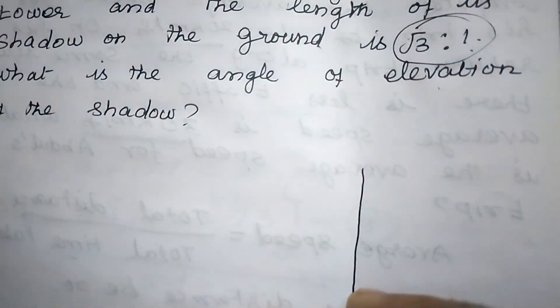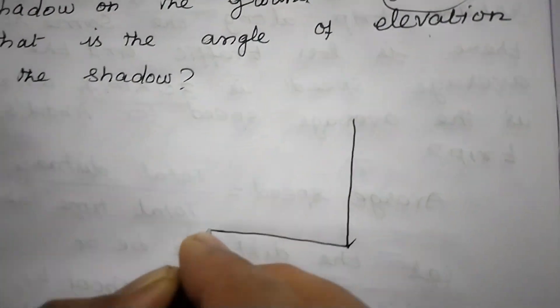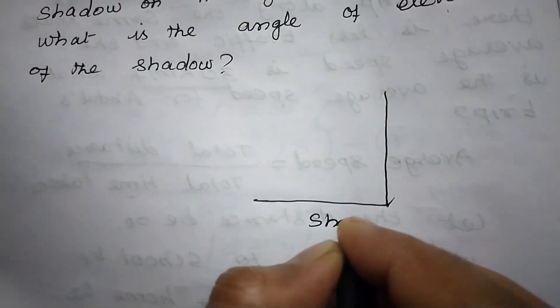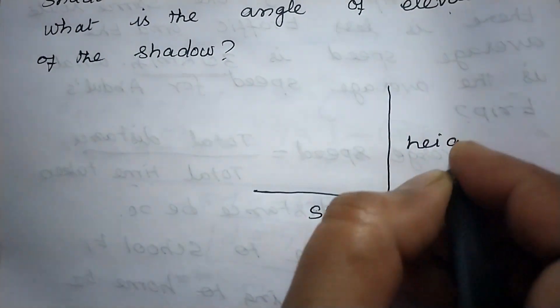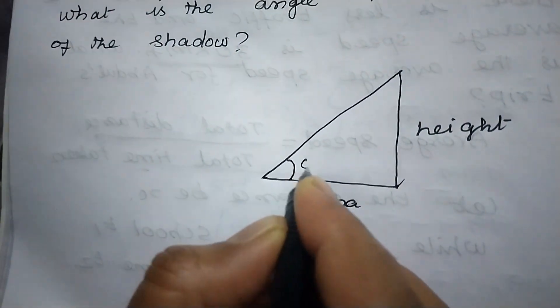So height of the tower. The tower is this one and its shadow on the ground. So this is shadow. This is shadow and this is height. Height of the tower. Then what is the angle of elevation? So angle of elevation is theta.